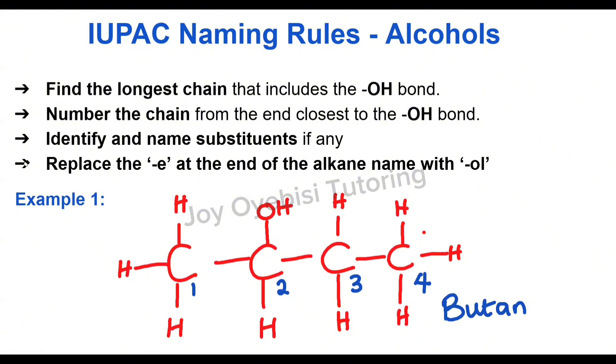But before that, we must mention the position of that OL. Because this OH can be on any of these carbons. Mentioning the position is very important. So this is going to be butan-2. Since the OH is on carbon 2, you're going to say butan-2 and then OL. That is the suffix for alcohols. And that's the name, butan-2-ol.